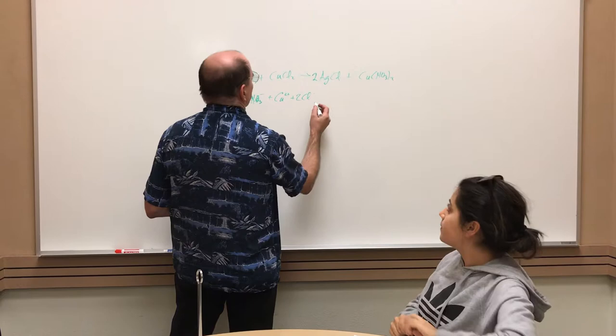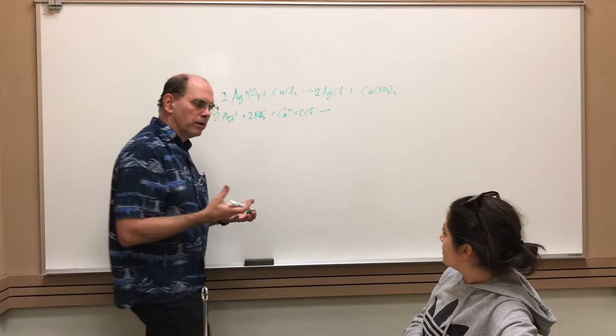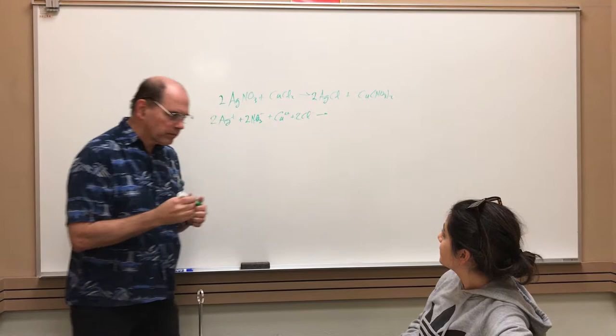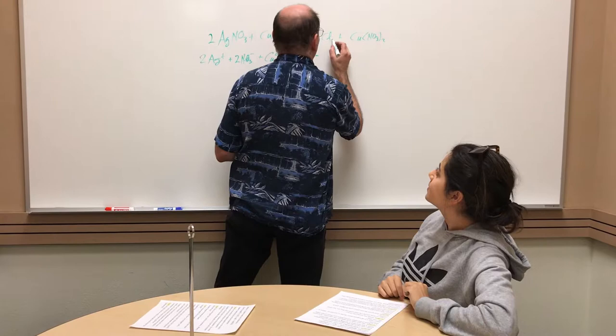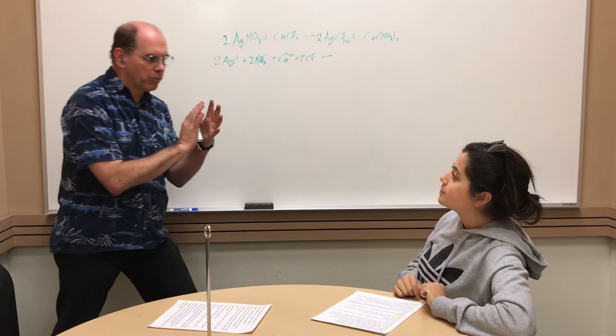And then we do the same thing with two silver ions. Now, what form does the silver chloride have? Is that solid? It is solid. Yes. So we would face a problem there. Exactly. Do we break apart solids? No. We don't.